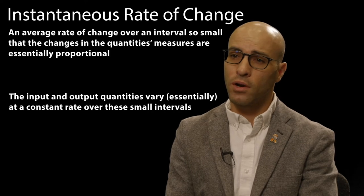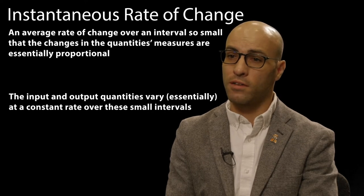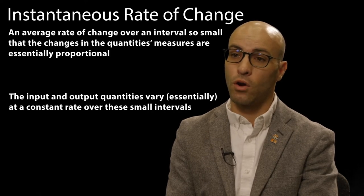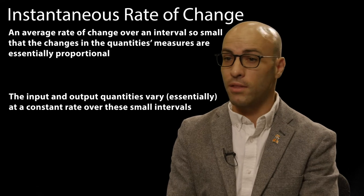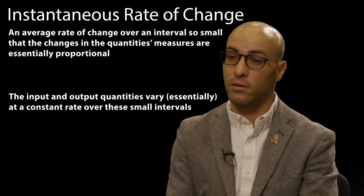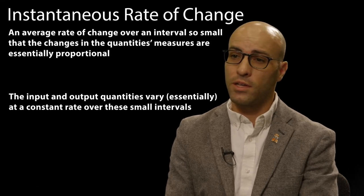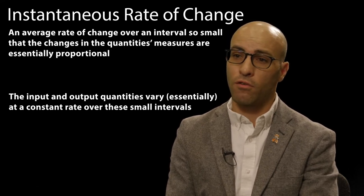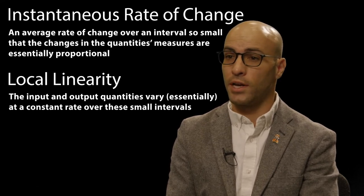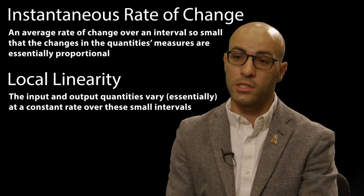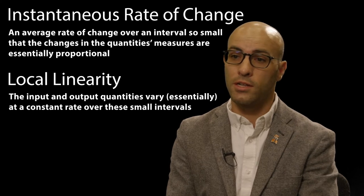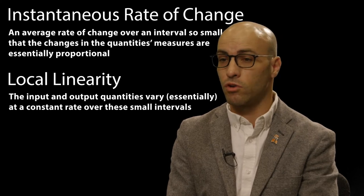The input and output quantities vary essentially at a constant rate over these very small intervals, making the graphs look linear. This concept is often referred to as local linearity, although local constant rate of change is a more quantitative description.